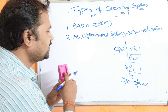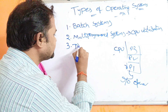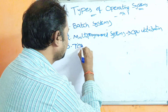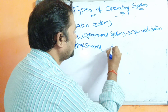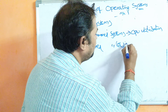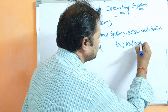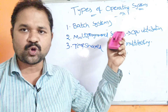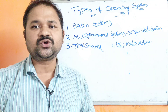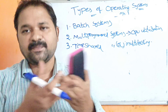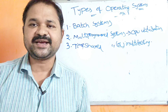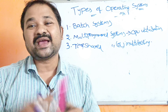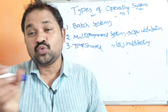The third type of operating system is the time sharing system, also called a multitasking system. Time sharing is an extension to the multiprogramming system. Here also main memory may contain multiple programs to be executed simultaneously. The CPU allocates a time quantum to all the processes.